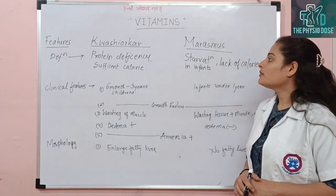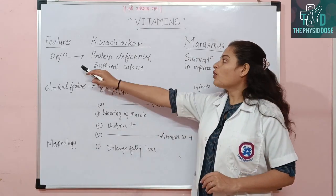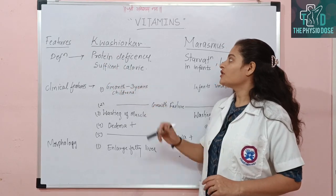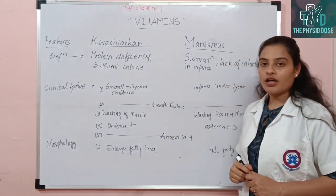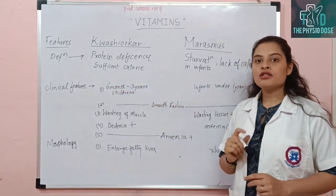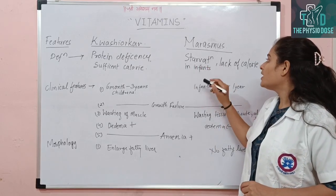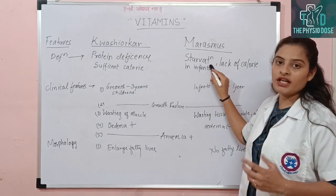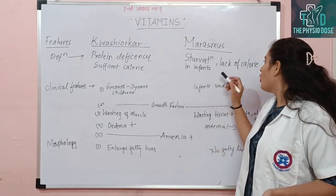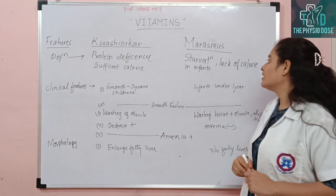As we start with the definition, the main problem in Kwashiorkor is protein deficiency, but the level of calories is sufficient. If you look at Marasmus, it is starvation in infants — the child does not get any calories at all.